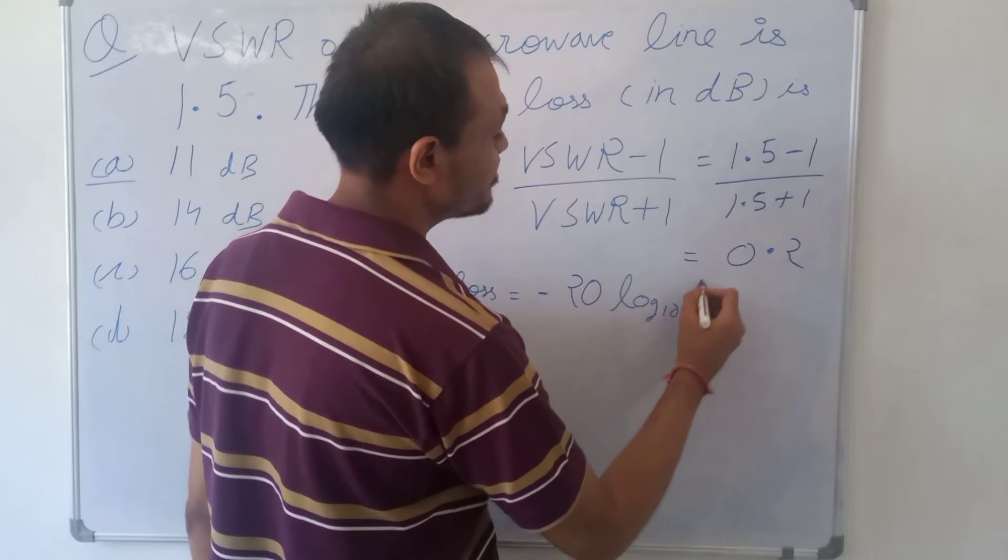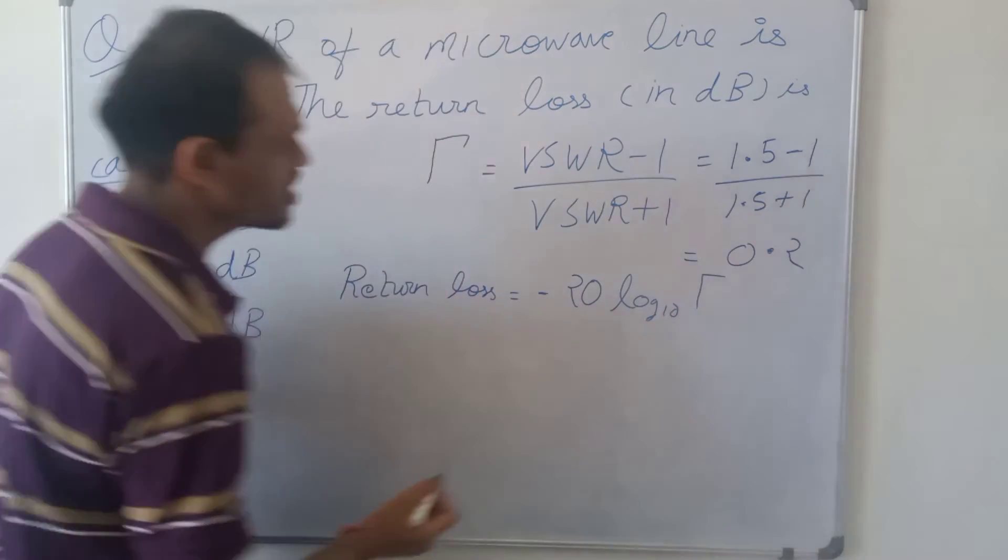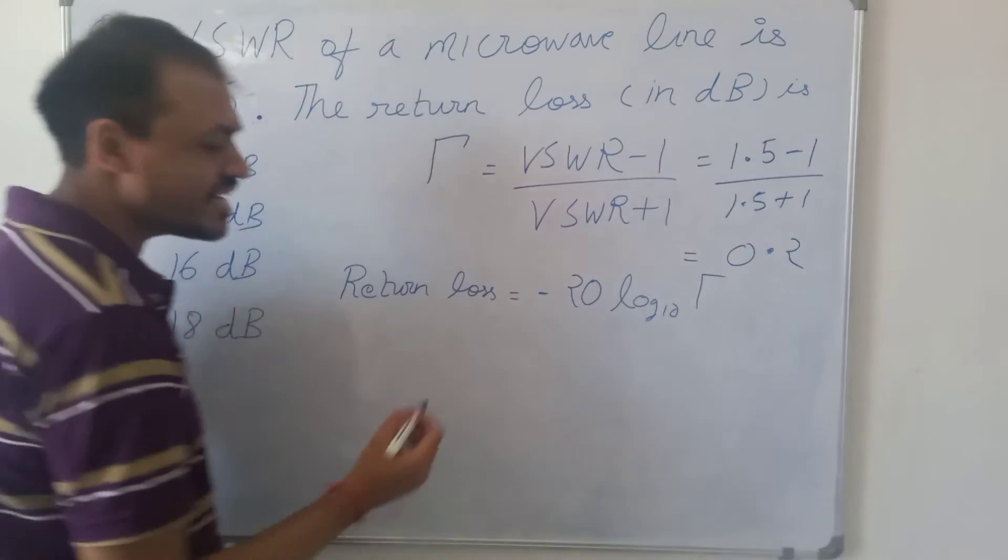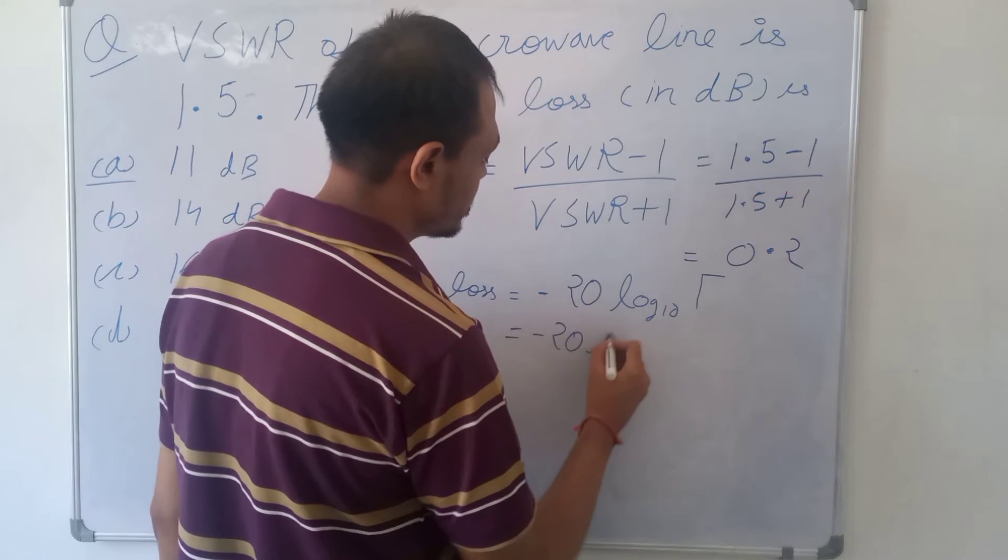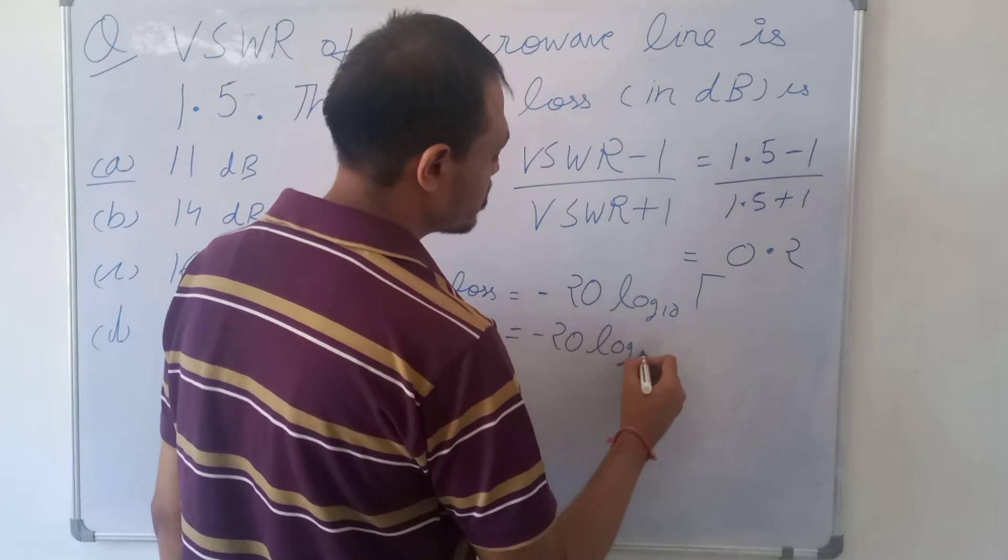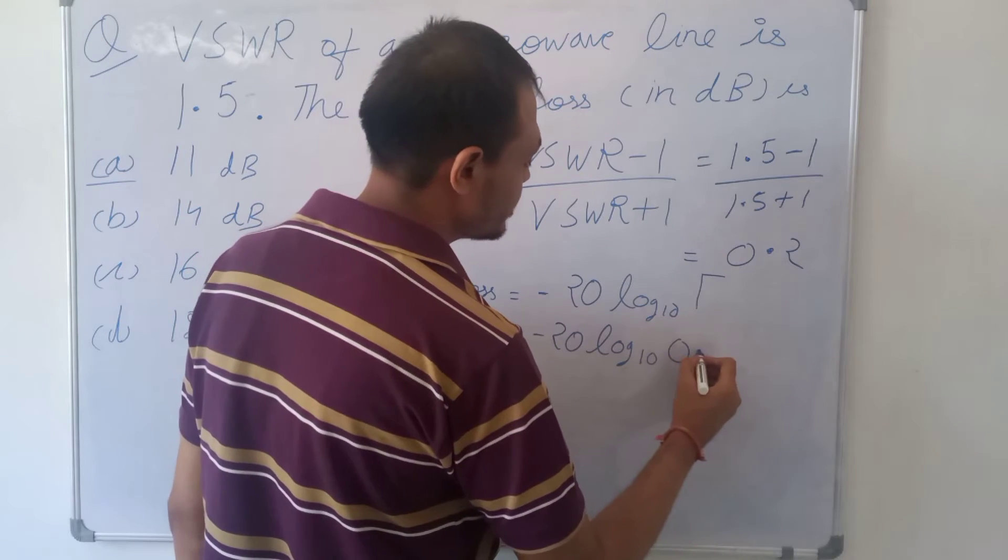We have already calculated tau as 0.2. So this will be minus 20 log base 10 of 0.2.